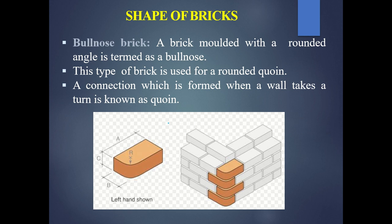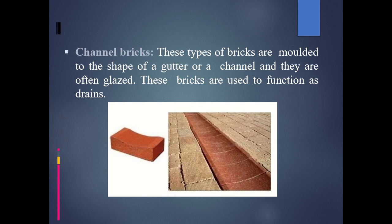These types of bricks are generally used for a rounded quoin. A quoin is the connection between masonry when there is a turn in the wall — one wall comes from one side and another wall from another side, and both are connected with no break in the continuation of the wall. This corner where the connectivity takes place is called a quoin, and bullnose bricks are generally used at these places.